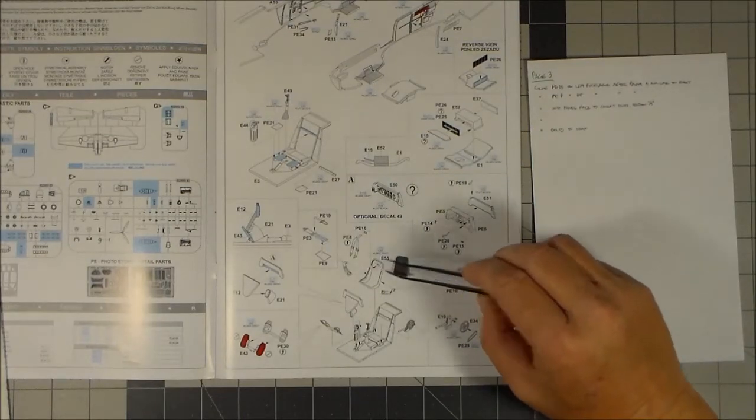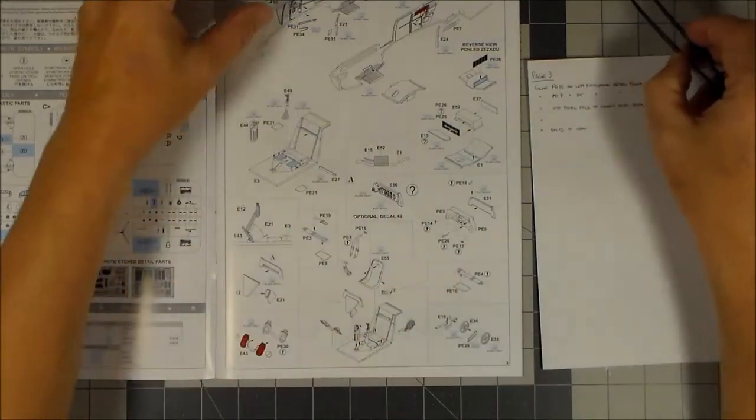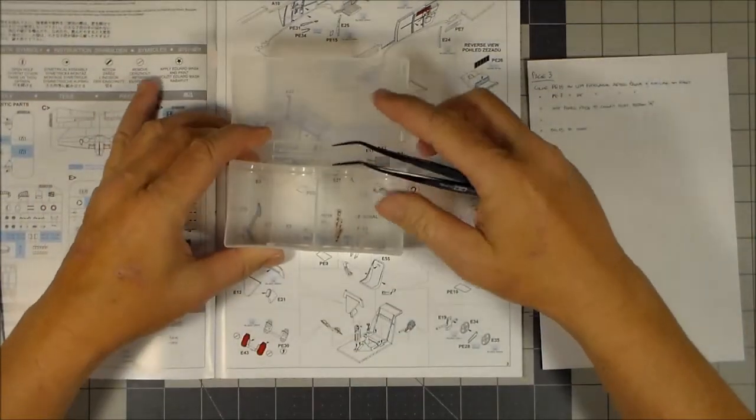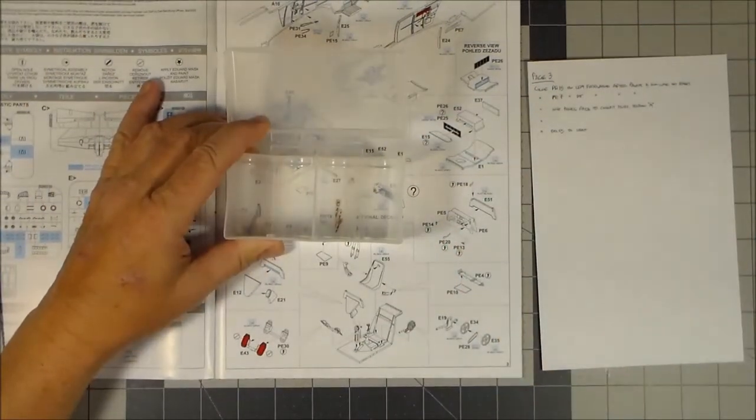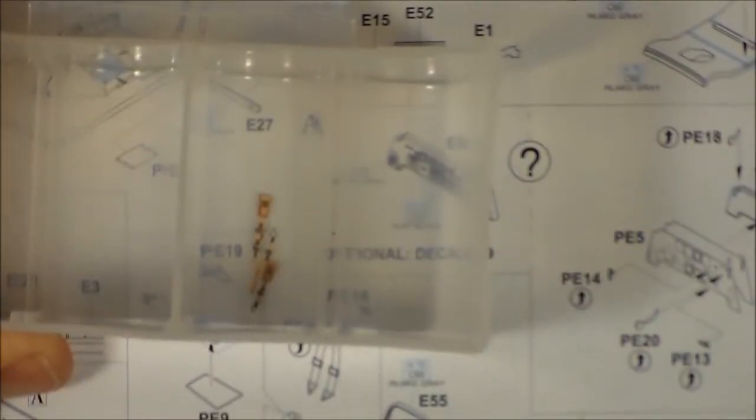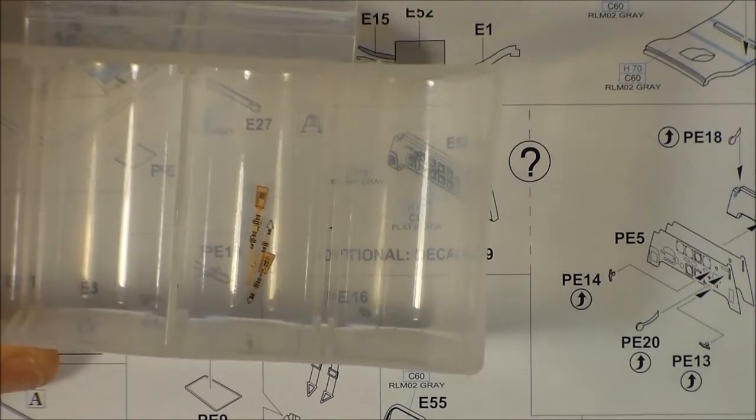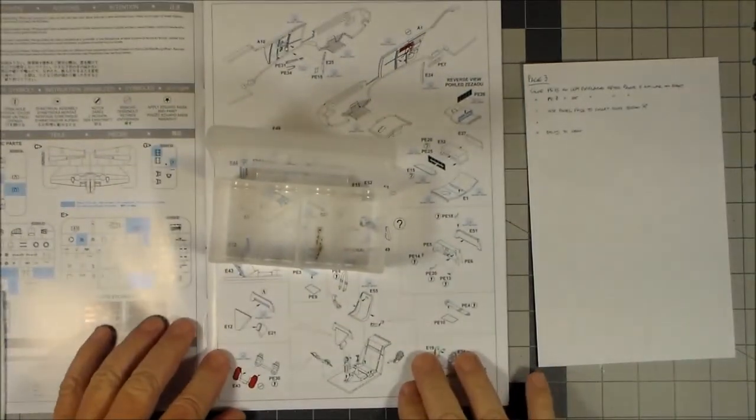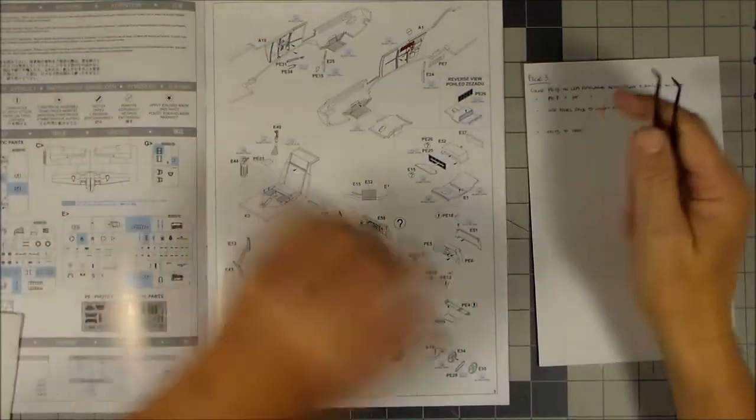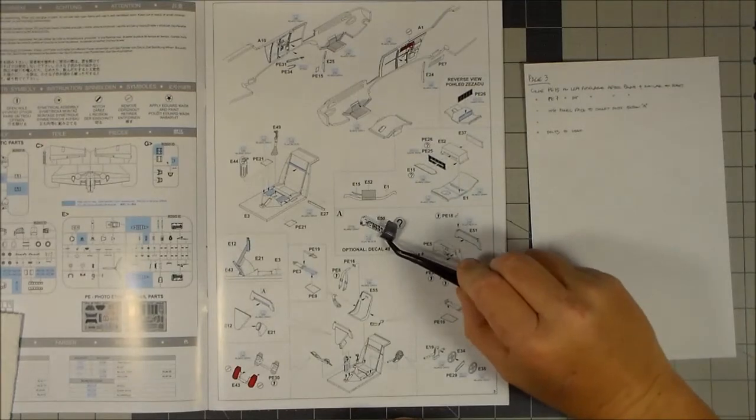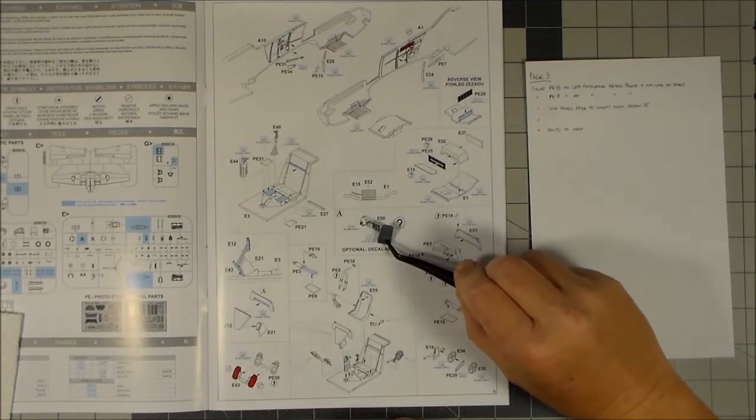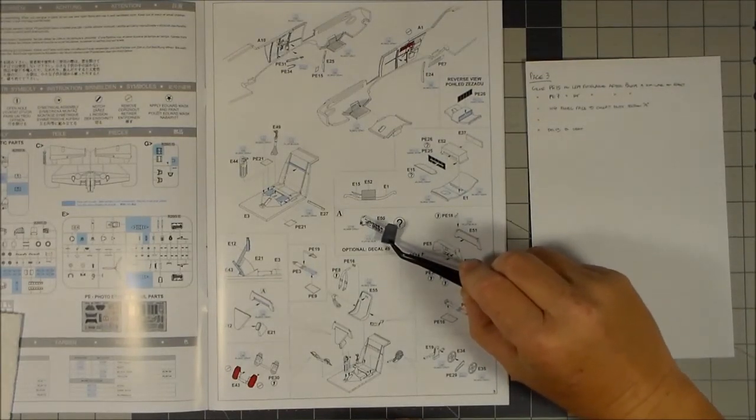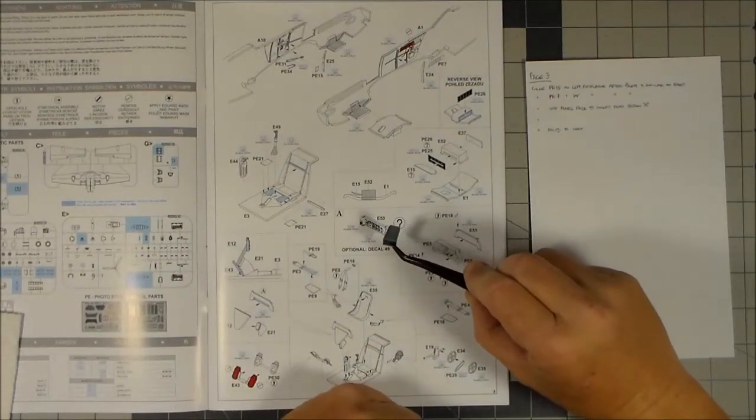The seat I put the one photo etch part on there because it's supposed to be the same color as the seat. Then I assembled the photo etch belts as you can see in here. So I got those assembled.